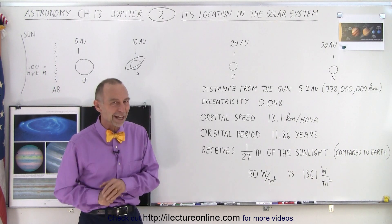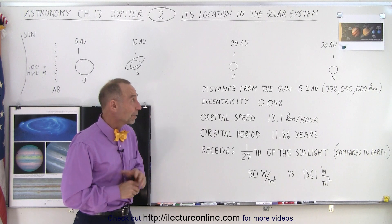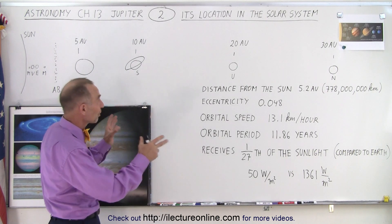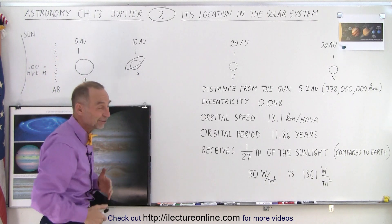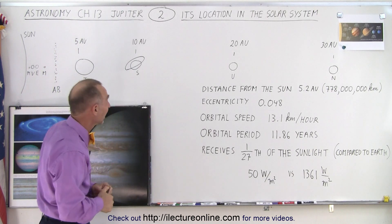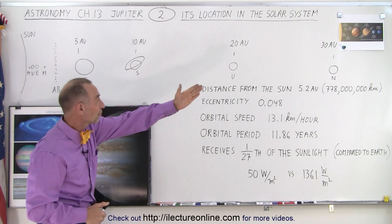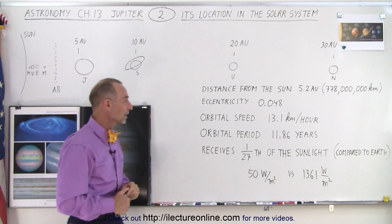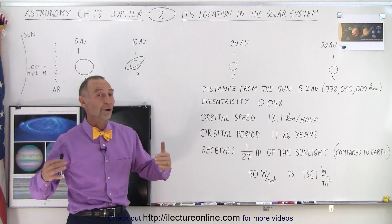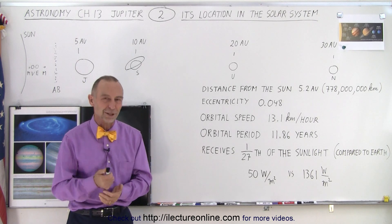But again, notice there's this huge difference in structure between the inner and the outer solar system. The boundary is the asteroid belt, which is kind of interesting. And notice the far spacing of the large planets compared to the close spacing of the inner planets. And so that's where Jupiter is positioned in our solar system.